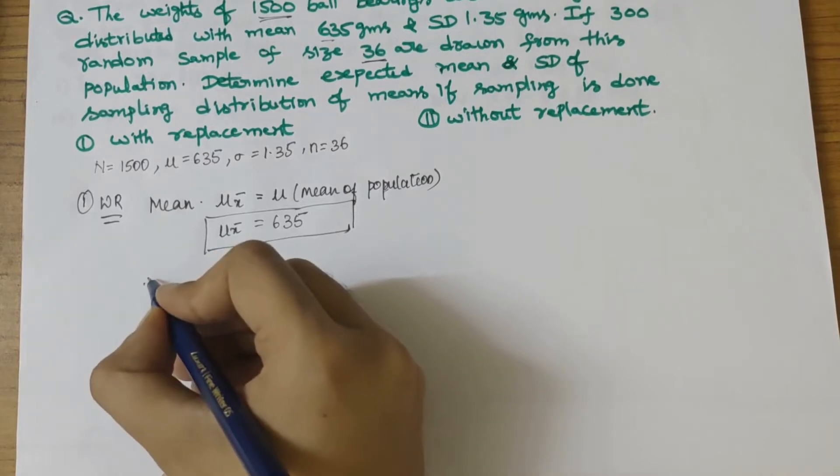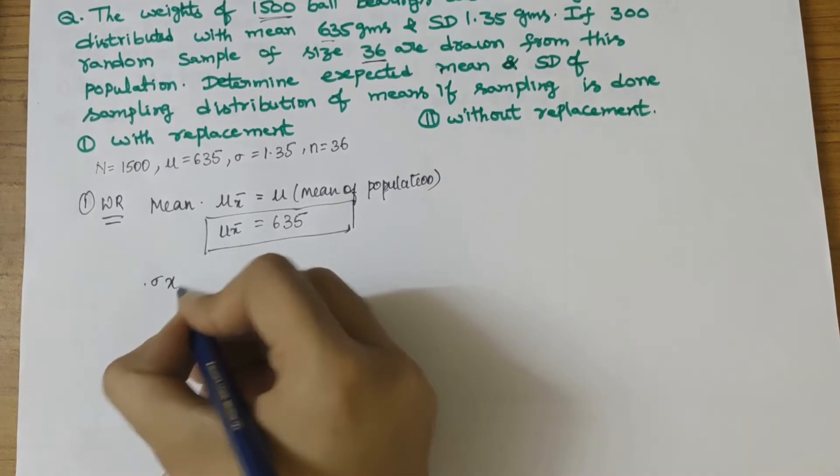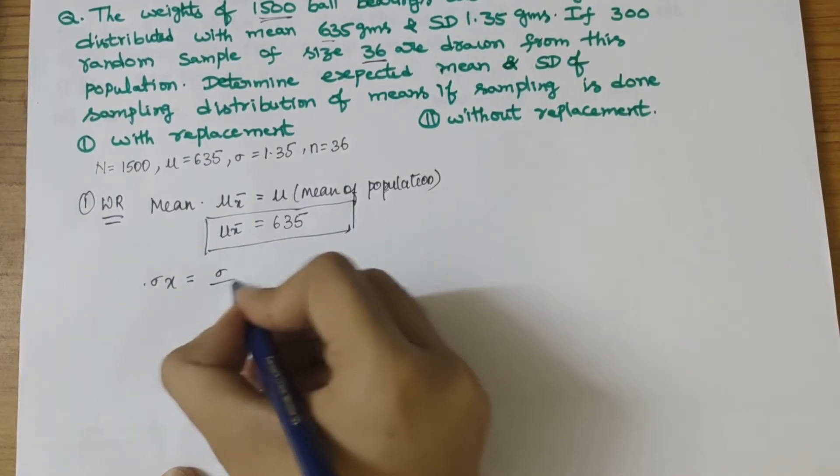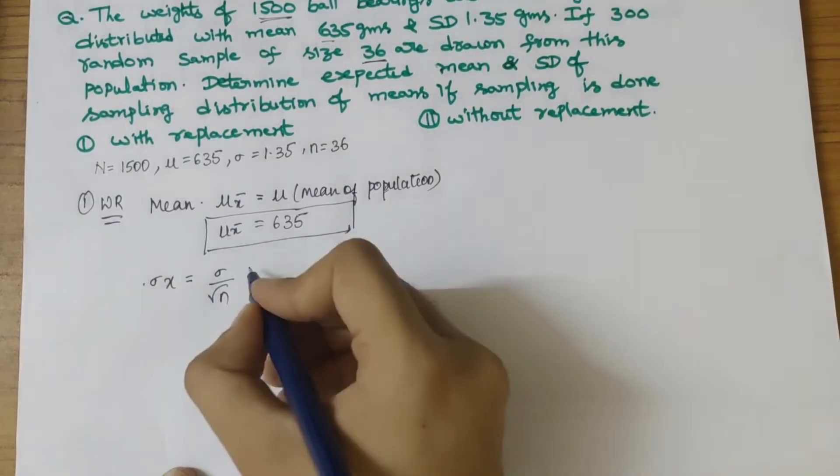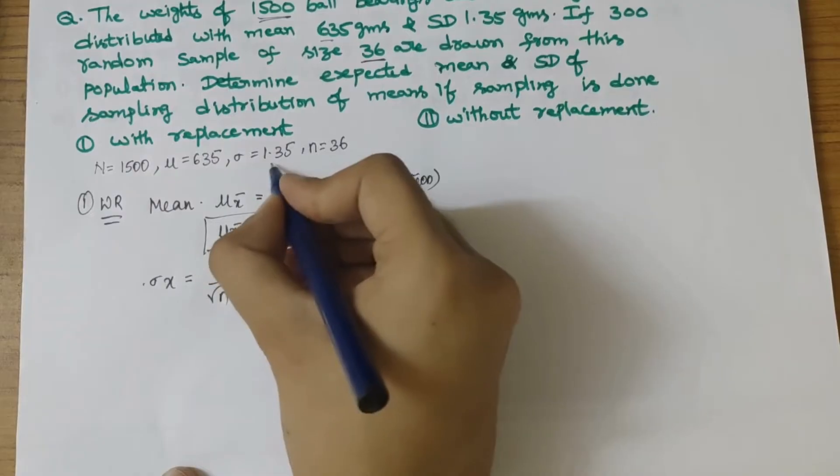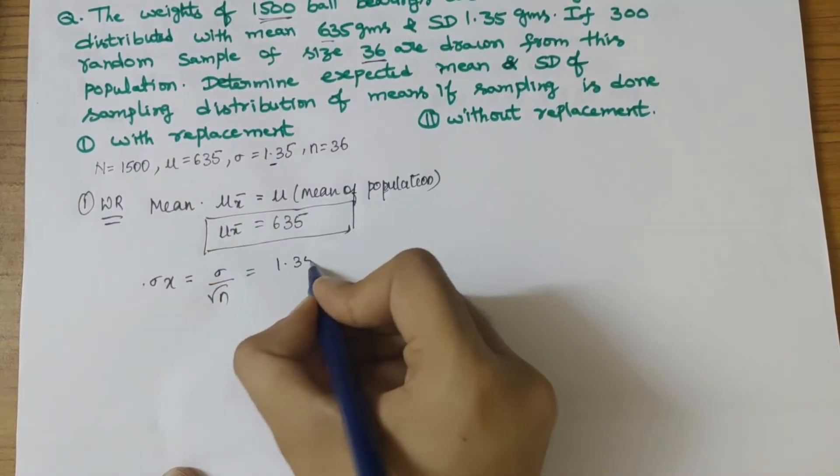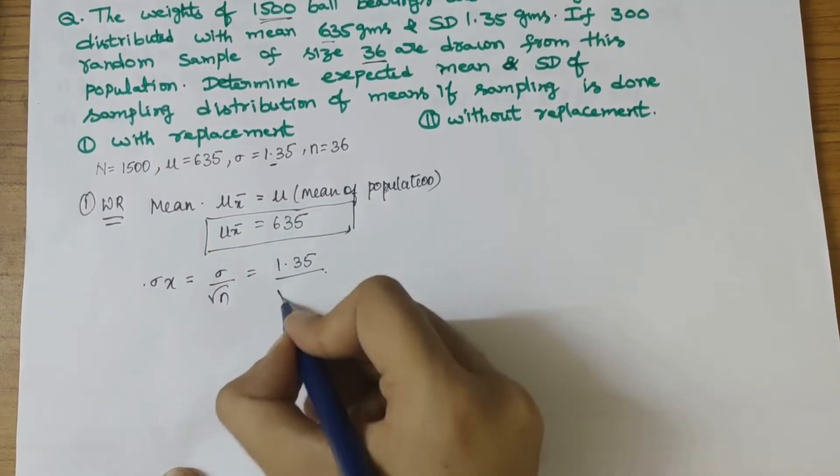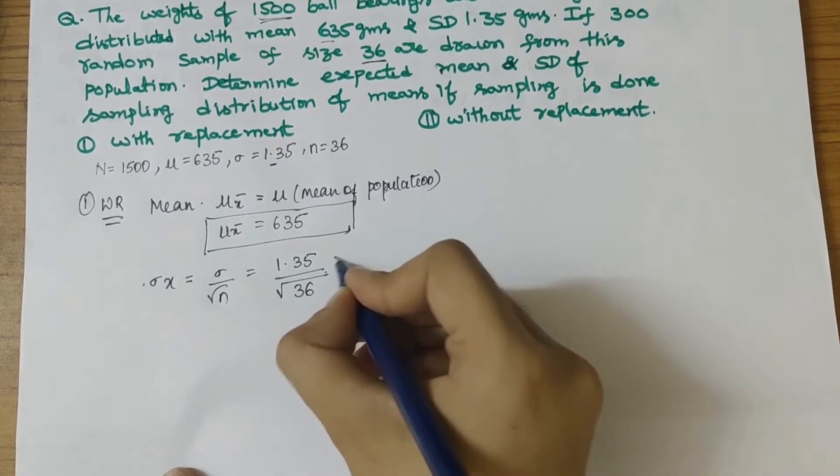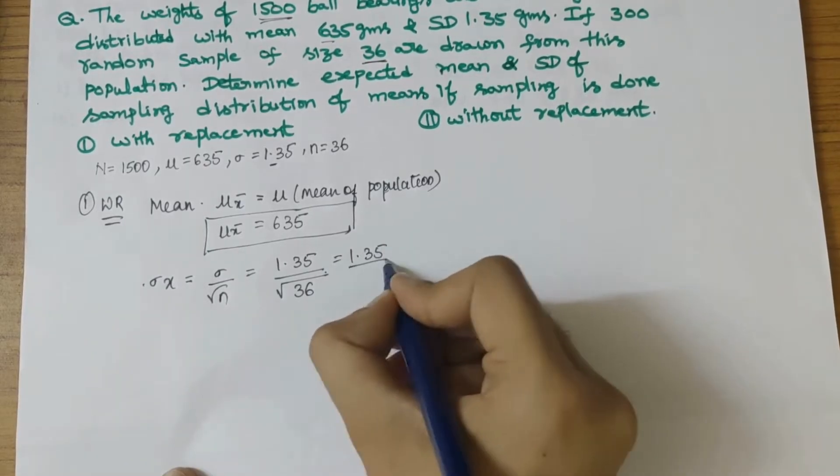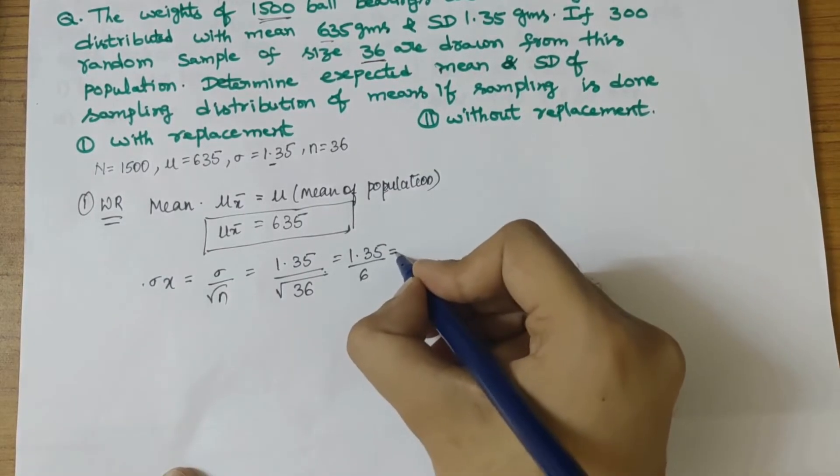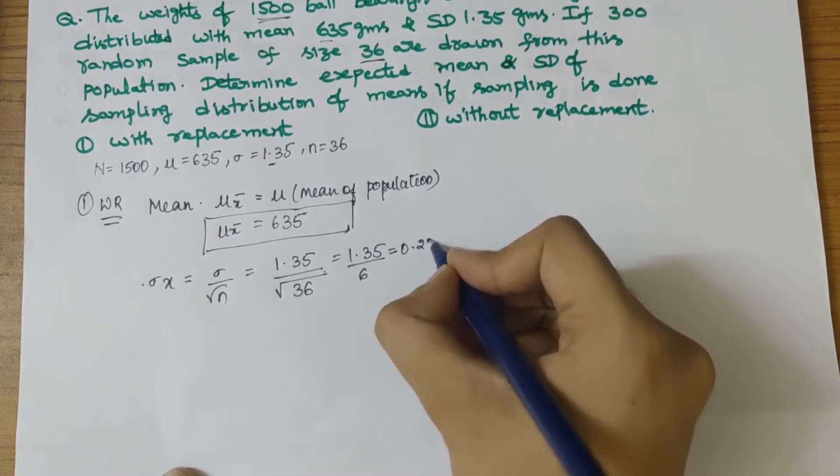Next, we find the standard deviation using the formula σx̄ = σ/√n. We have 1.35 divided by √36, which is 1.35 by 6. Solving this gives 0.225.